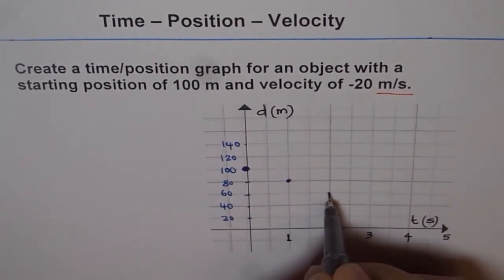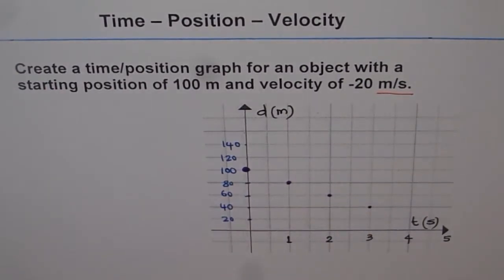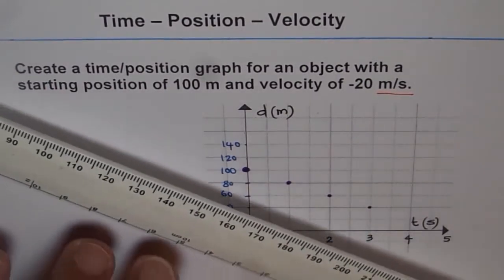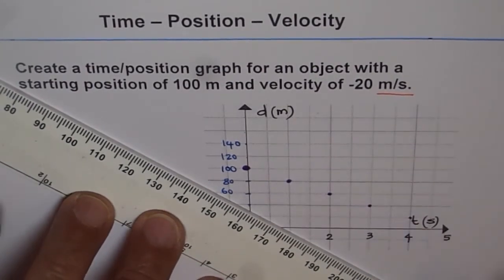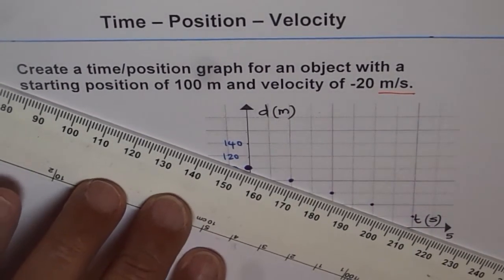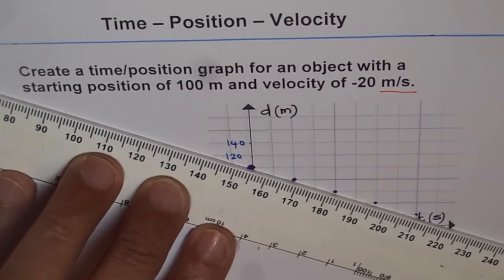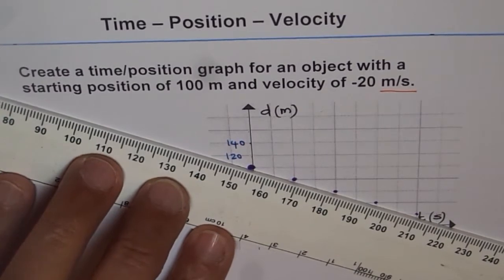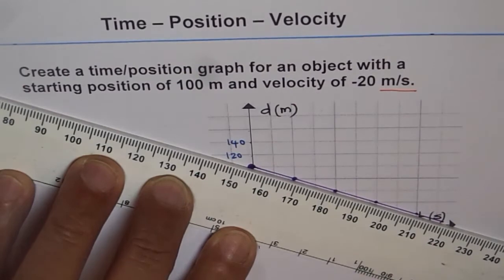Then again, 20 more. Then again, 20 more, kind of like this. So we can join these points and draw our line. So ultimately, we know in five seconds, the object will be at zero distance away. So we can just join them and get our graph. So this graph will be like this.